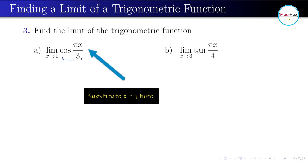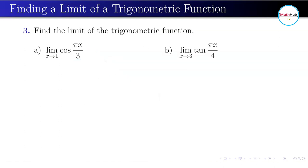In this case, we will evaluate cosine πx over 3 at x equals 1. So to get the limit of cosine πx over 3 as x approaches 1, this is just equal to cosine of π over 3. What is cosine of π over 3? Cosine of π over 3 is just equal to 1 half.